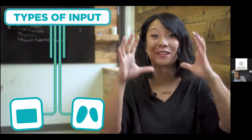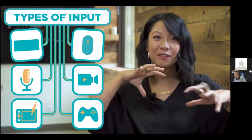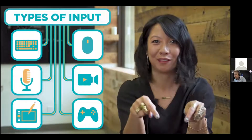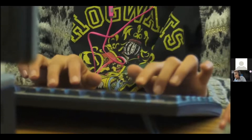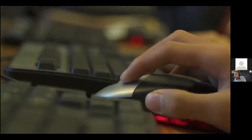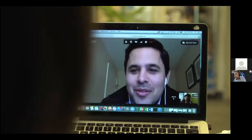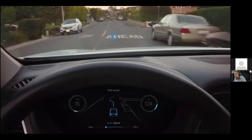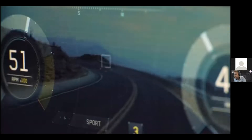First, we're going to talk about input. Input is the stuff that the world does, or that you do, that makes the computer do stuff. You can tell a computer what to do with a keyboard, a mouse, a microphone, or a camera. And now if you're wearing a computer on your wrist, it might listen to your heartbeat, or in your car it might listen to what the car is doing. A touch screen can actually sense your finger and takes that as input.